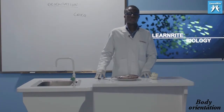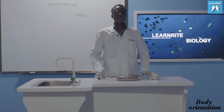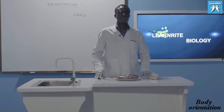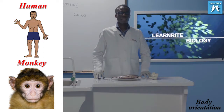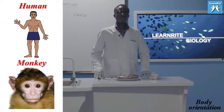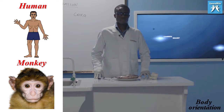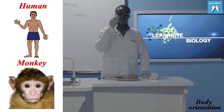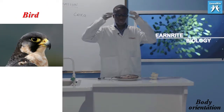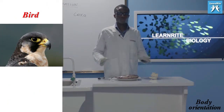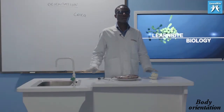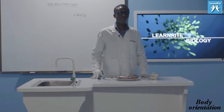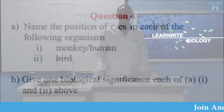Let's look at the answers. Name the position of eyes in each organism. If you look at a monkey or a human being, the eyes are ventrally placed — they are in front. Unlike eyes in birds, which are laterally placed. So we have solved A(i) and A(ii): position of eyes in human being is ventral, and in birds it is lateral.